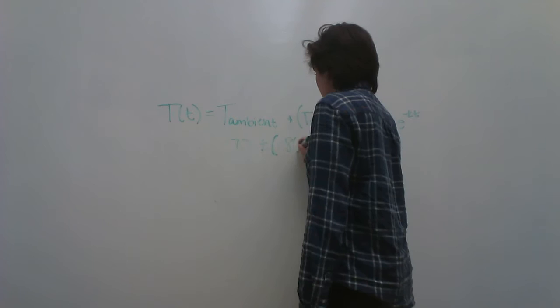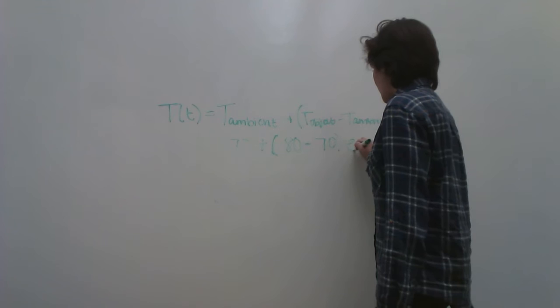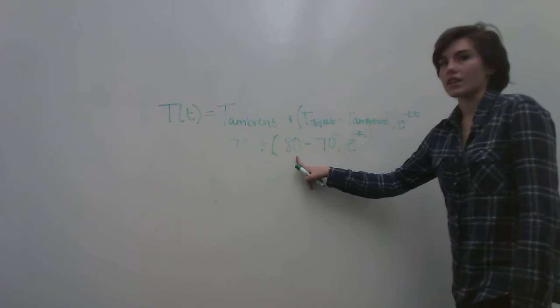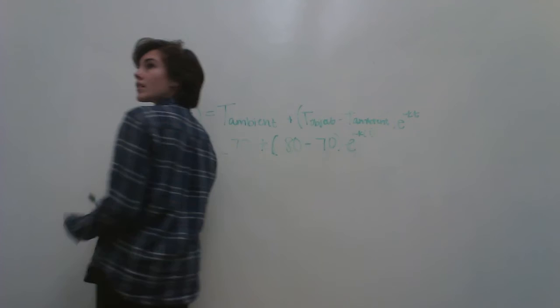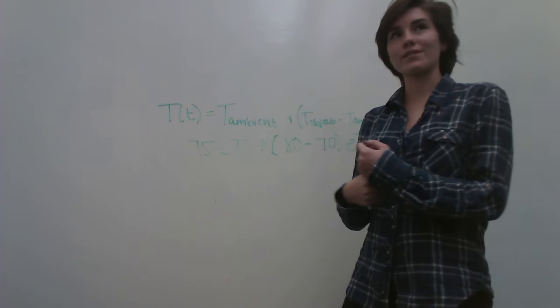The first initial body was down about 80 degrees, and you do the minus T ambient, which was 70. And the E, you're looking for k, and the T is 71 because the initial was 80. And that equals 75, was the first body count.